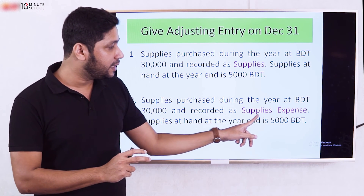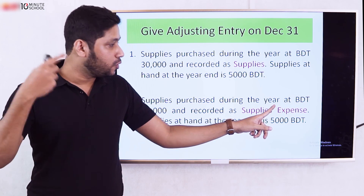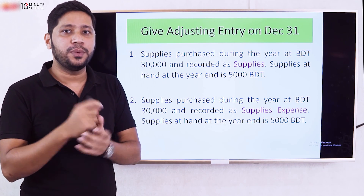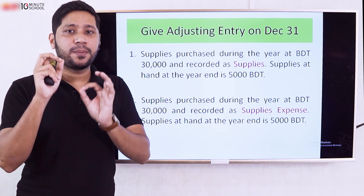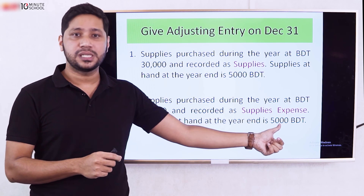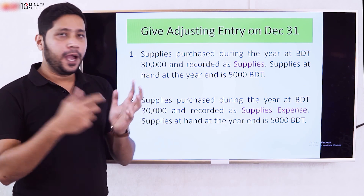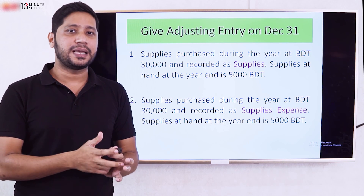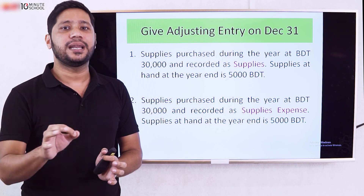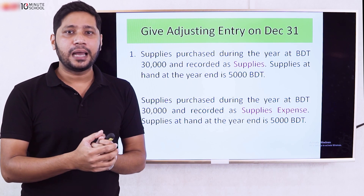If it was recorded as Supplies Expense initially, the adjusting entry handles the unused portion differently. The unused amount at year end is $5,000. Next, we will cover unearned revenue as another type of adjusting entry.